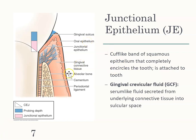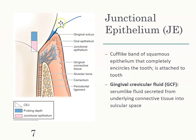Junctional epithelium — this is a word we all need to be very familiar with. It is at the very base of the sulcus. If I were to stick a probe in, the very bottom of my probe hits the junctional epithelium — the part that is attached, the epithelium that is attached around the tooth. When you have an unhealthy mouth with gingivitis or periodontitis, you're going to have GCF — gingival crevicular fluid — a serum-like fluid secreted from the sulcus. A healthy mouth won't have GCF.